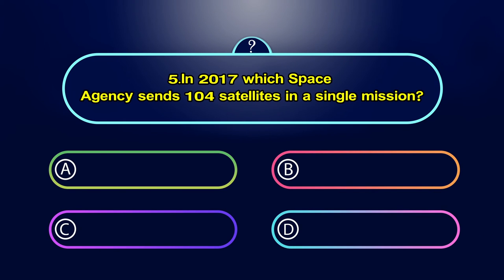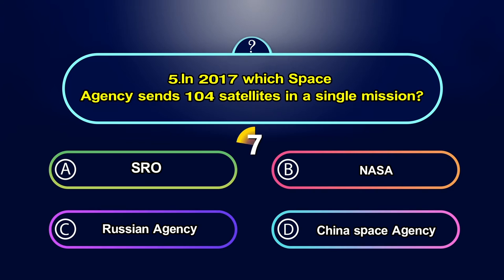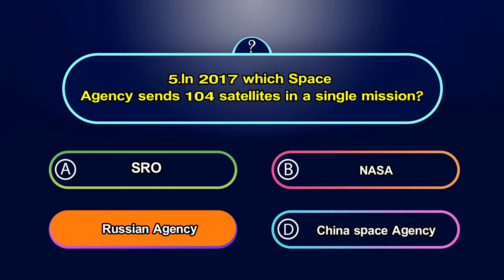In 2017, which space agency sent 104 satellites in a single mission? Option A. ISRO, Option B. NASA, Option C. Russian Agency, Option D. China Space Agency. Your time starts now. The answer is A. ISRO.